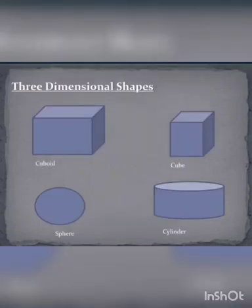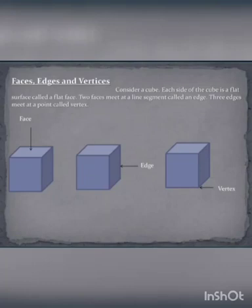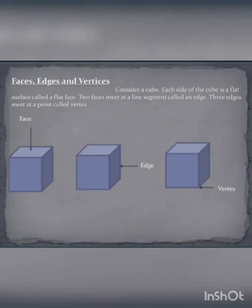Some three-dimensional shapes are cuboid, cube, sphere, and cylinder. Now let us look at the faces, edges, and vertices of a three-dimensional shape, taking a cube as an example. Each side of the cube is a flat surface called a face — a cube has six faces. Two faces meet at a line segment called an edge — a cube has 12 edges. Three edges meet at a point called a vertex — a cube has eight vertices.